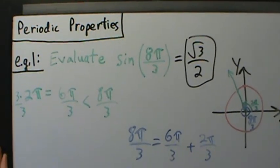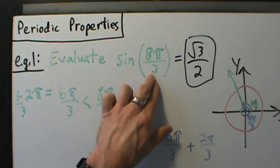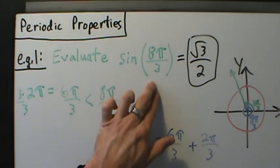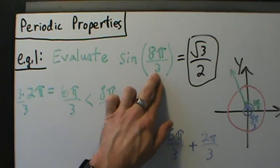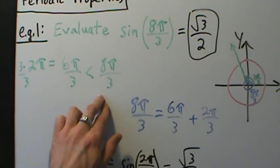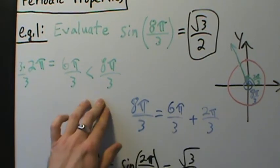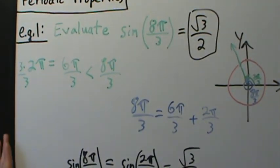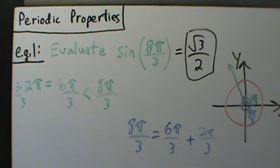It might seem complicated, but just remember: all we had to do was look at 8π over 3 and ask, is it larger than 2π or smaller than 0? It's positive, so then we ask, is it larger than 2π? Because 2π is 6π over 3, and 8π over 3 is larger, we subtract 2π as often as we need to until we get an angle between 0 and 2π — and hopefully a special angle on the unit circle. It was: 2π over 3. That's example 1 with periodic properties, using them to evaluate trig functions.